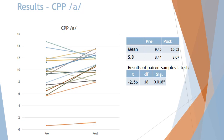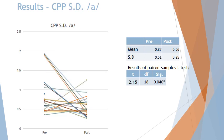Here are the results. The CPP in vowel prolongation /a/ pre and post improved — most of them improved — and the mean went from 9.45 decibels to 10.63. Using a paired samples t-test, this was statistically significant. The CPP-SD likewise was also statistically significant; the post-treatment score was lower, which was an indication of improvement in their voice.